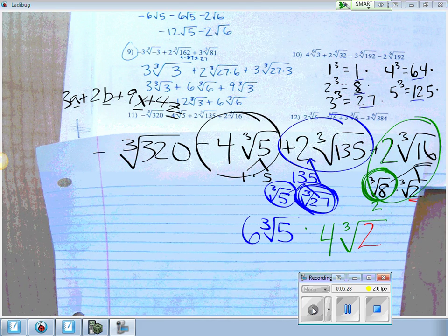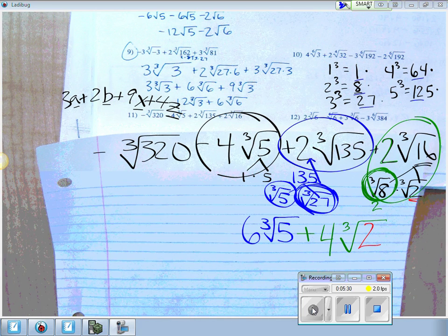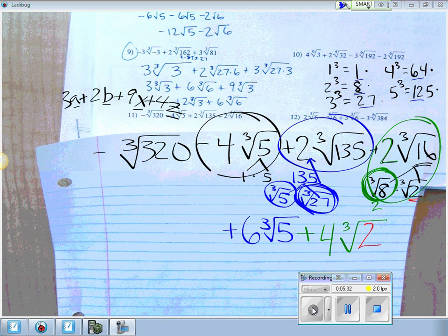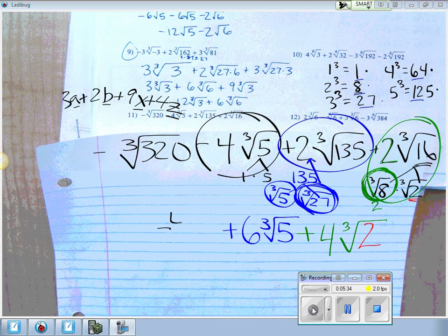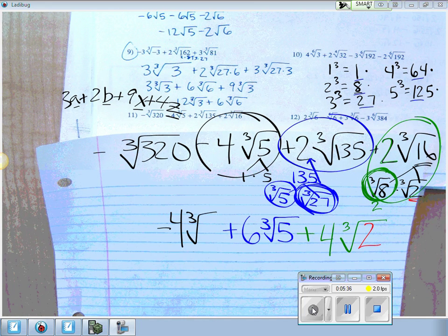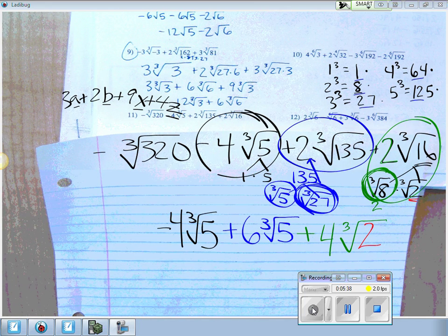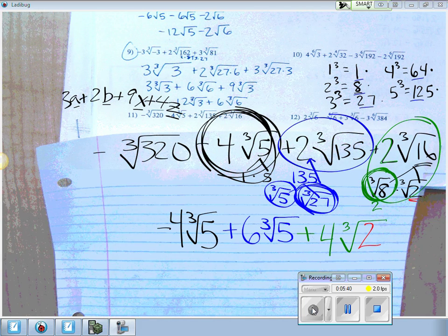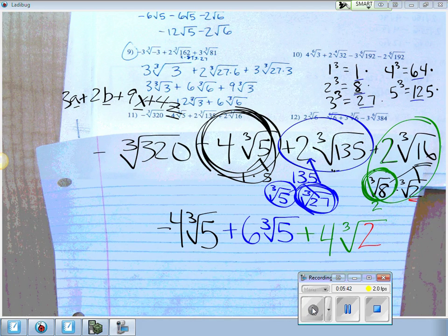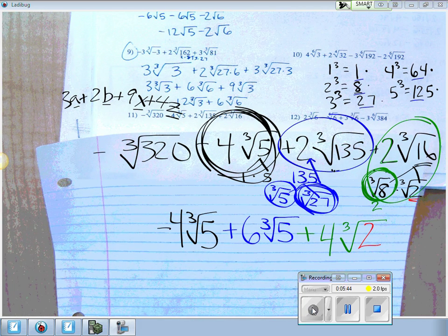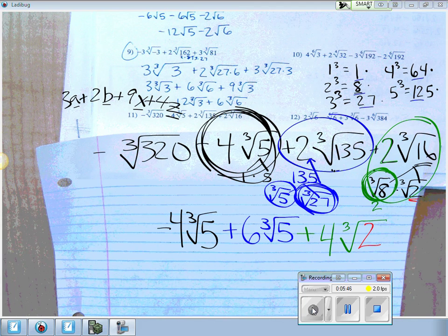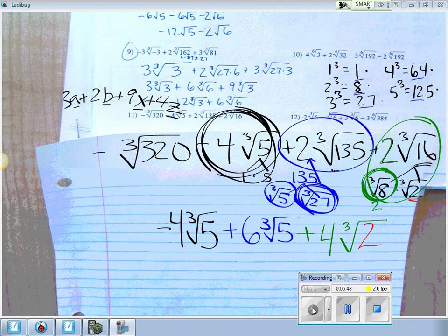That was positive, right? This is positive. This is minus 4 cube roots of 5. So we have this one, the blue one, and the green one all listed. Now it's time to tackle that one out front. The 320.